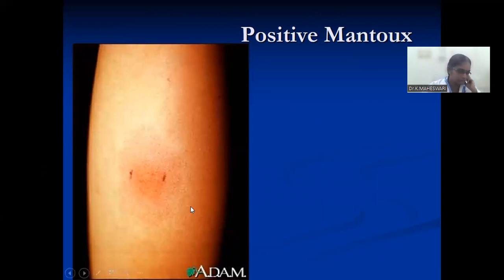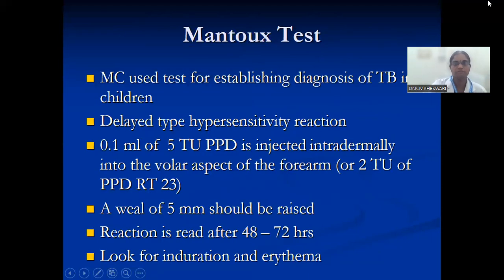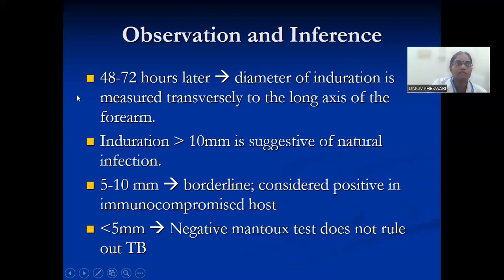The Mantoux test is the most commonly used test for establishing the diagnosis of tuberculosis. It is a delayed-type hypersensitivity reaction. 0.1 mL of 5 tuberculin units PPD is injected intradermally. The reaction is read after 48 to 72 hours. Look for induration — erythema may not always be visible. Diameter of induration is measured transversely to the long axis of the forearm. Induration more than 10 mm suggests natural infection; 5 to 10 mm is borderline; less than 5 mm is a negative Mantoux test, which does not rule out tuberculosis.